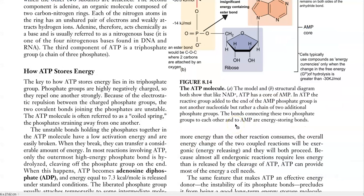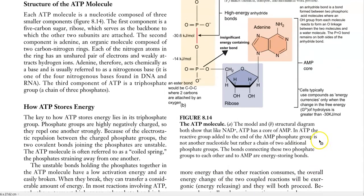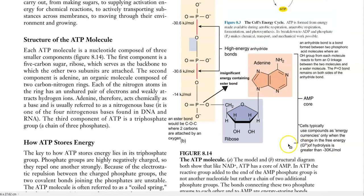Next we look at how ATP stores energy in the cell. The key lies with the triphosphate group attached to the sugar molecule. The phosphate groups are highly negatively charged so they repel one another strongly, causing electrostatic repulsion. The two covalent bonds joining the phosphates are unstable, and thus the unstable bonds holding the phosphates together in the ATP molecule have a low activation energy. As a result, when hydrolyzed, these anhydride bonds are easily broken and energy is released.